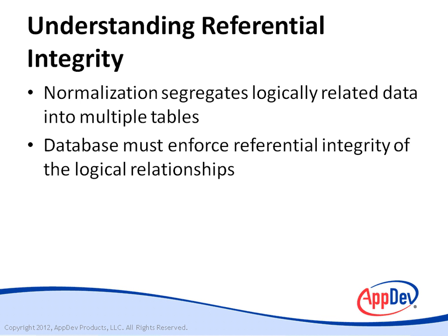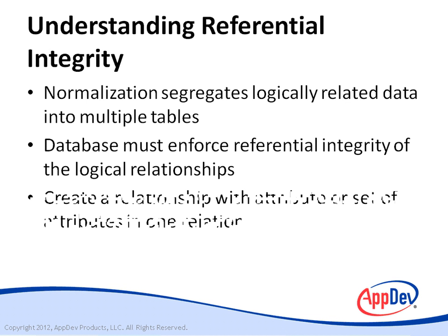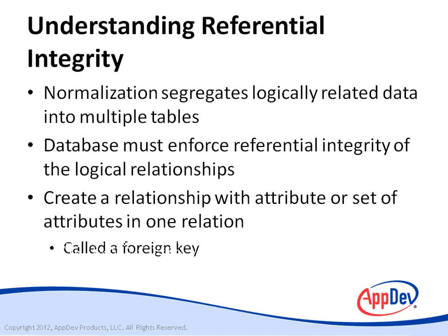For example, if student data resides in one table and enrollment information resides in another table, the database has to ensure that every student ID in the enrollment table has a corresponding record in the student table. You define a relationship between two relations by creating an attribute or set of attributes, called a foreign key, in one relation, which contains values that match the values in the primary key of the other relation.